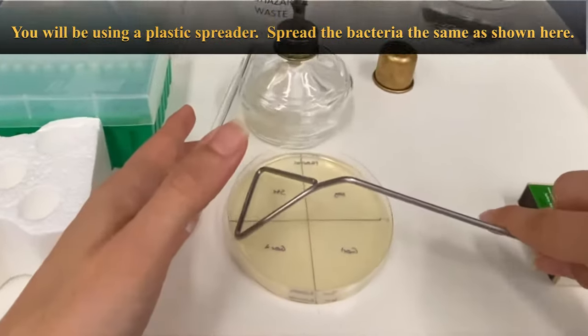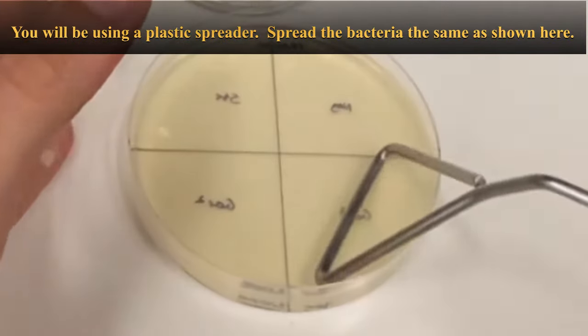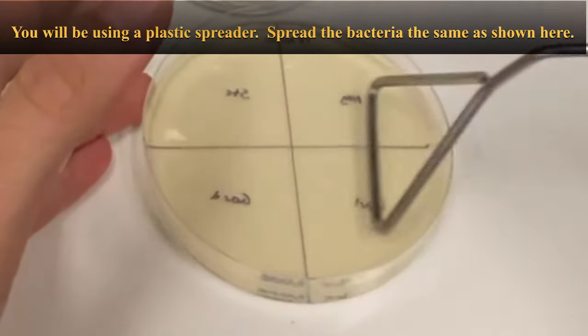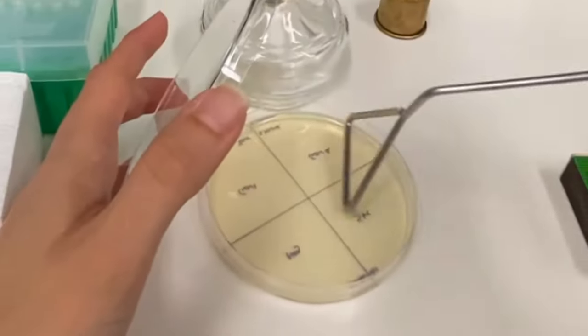To spread your bacteria, lift the plate lid and allow the metal spreader to just touch the surface of the agar. Spread the bacteria suspension evenly over the entire surface.